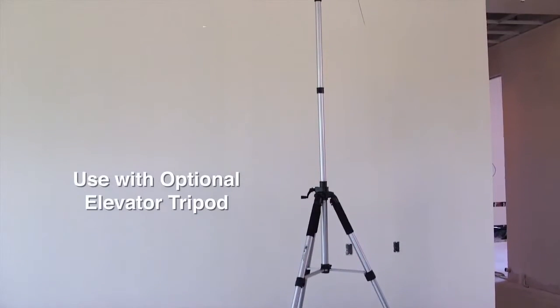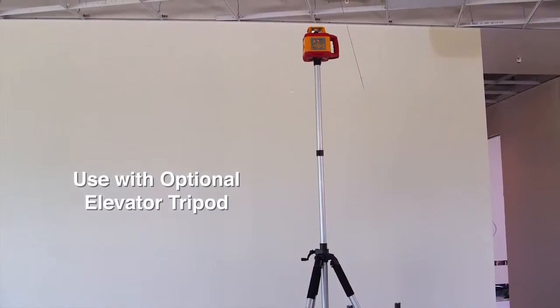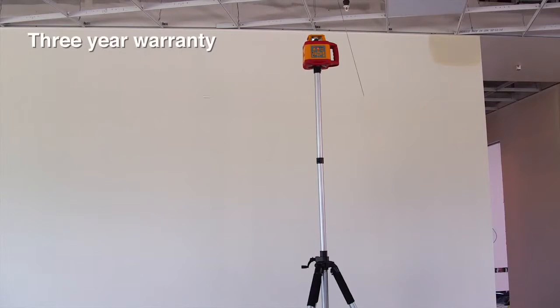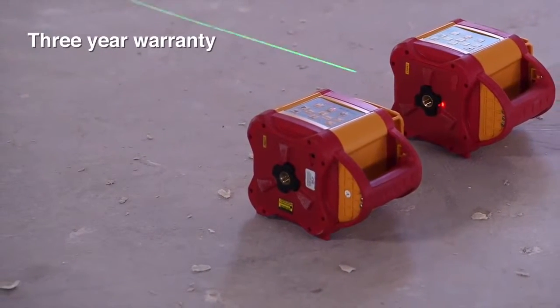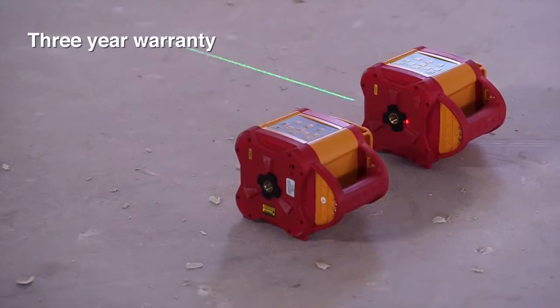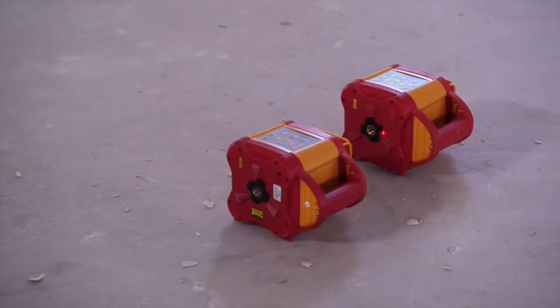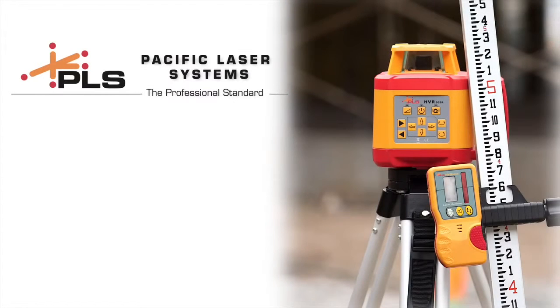And like all PLS products, the HVR 505 Red and Green come with limited 3-year warranties. Now there's a choice for value, quality, and performance in a rotary laser system. The HVR 505R and the HVR 505 Green. Only from Pacific Laser Systems. The professional standard in construction lasers.